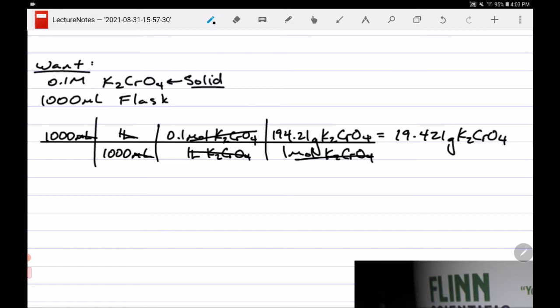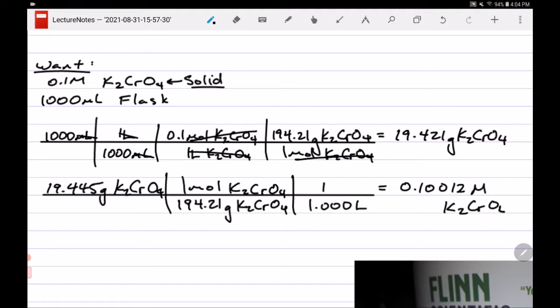But we didn't get 19.421 grams. And that's okay. What we got was 19.445 grams. So instead of trying to get exactly to 19.421, let's see what exactly we got instead. So this calculation will be going backwards to try to find the molarity now that we have the mass. So instead of finding a 0.1 molar solution, I found a 0.10012 molar solution.